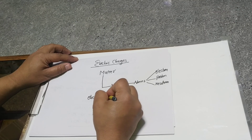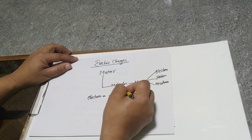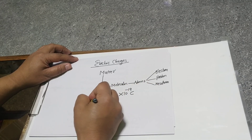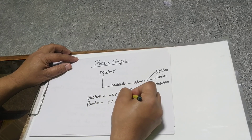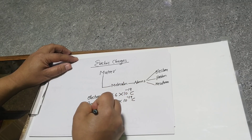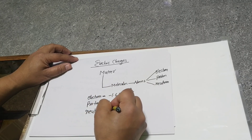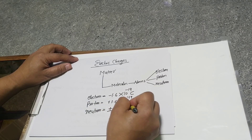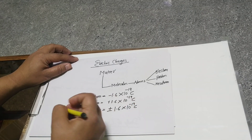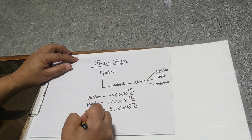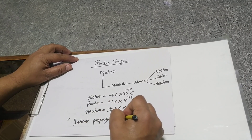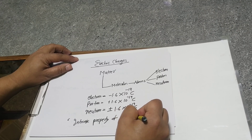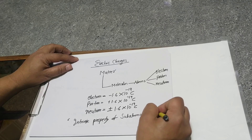We know that an electron has minus 1.6 × 10⁻¹⁹ coulomb. The proton has a positive charge with the same value, 1.6 × 10⁻¹⁹ coulomb. The neutron is neutral — we can say plus or minus 1.6 × 10⁻¹⁹ coulomb. So, what are electric charges? Basically, they are an intrinsic property of subatomic particles of matter.